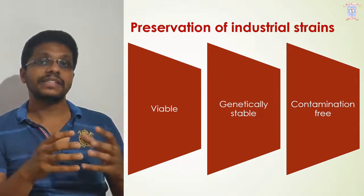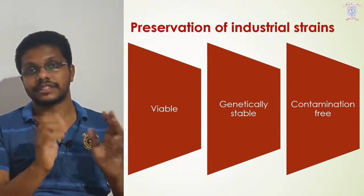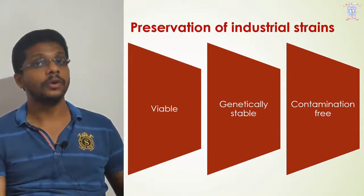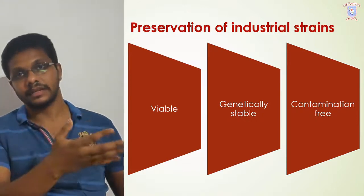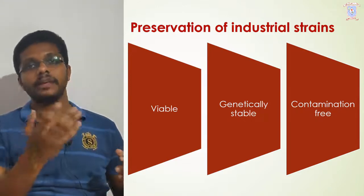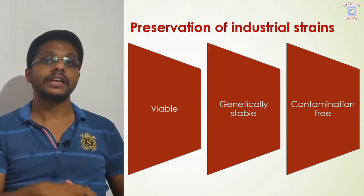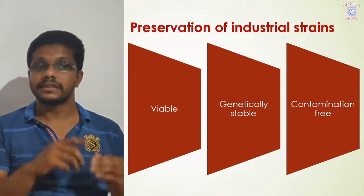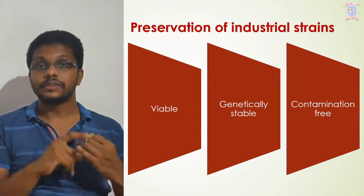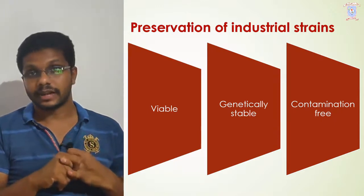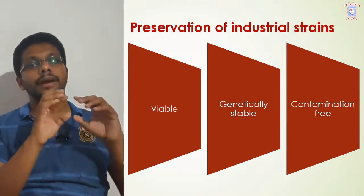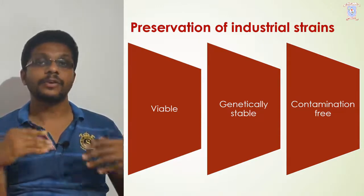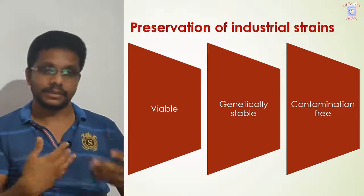Finally, the preservation method should be contamination-free. There should not be any contamination by other microorganisms or viruses. If a virus contaminates the culture, it may kill all the microorganisms. So there should not be any type of contamination during the time of preservation. In summary, any industrial strain preservation method should maintain viability, maintain the genetic stability of the microorganism, and be contamination-free. Using these three parameters, we are going to assess the usability of each and every method.